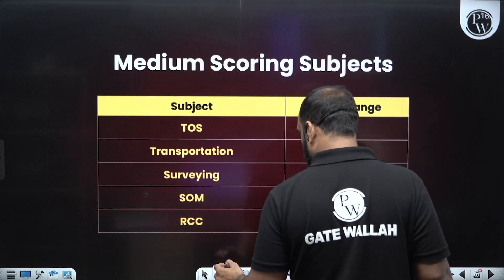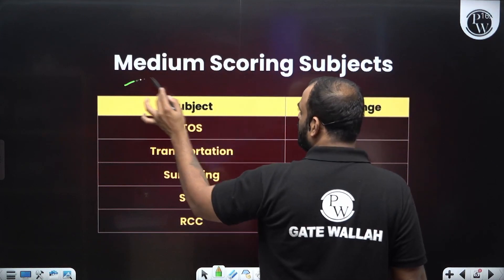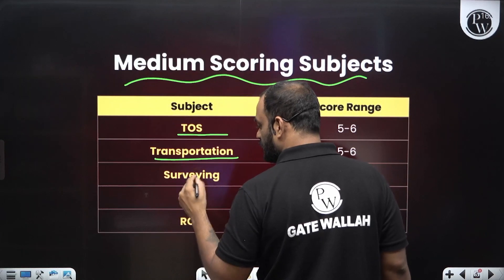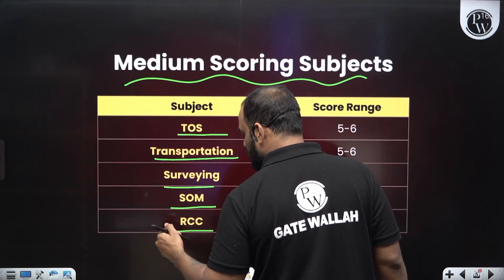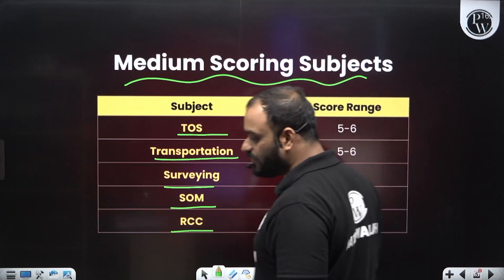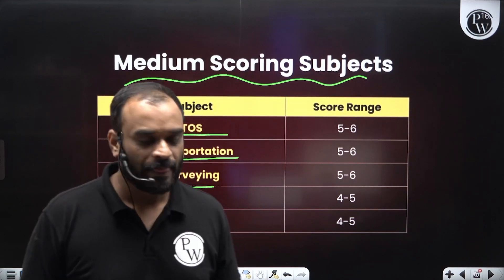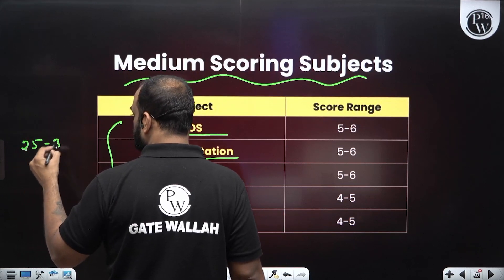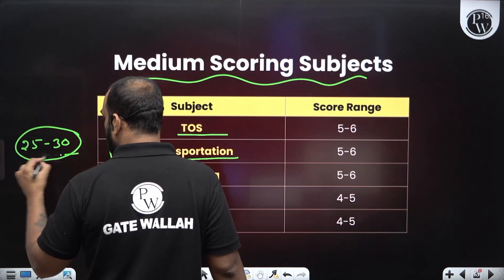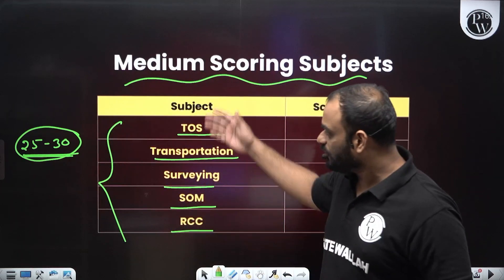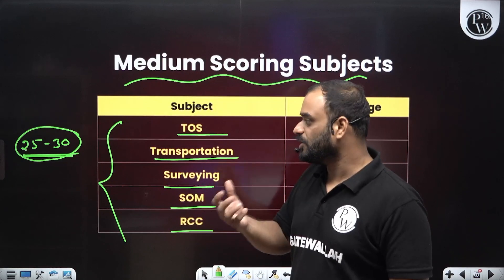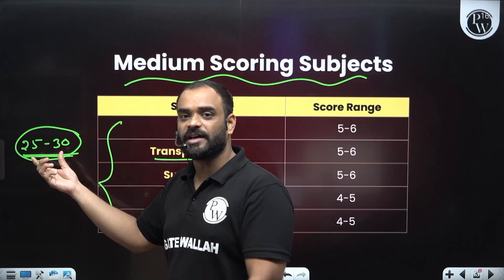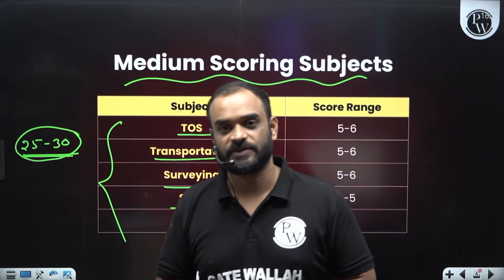The second category is medium scoring subjects. In medium scoring subjects we have: theory of structure, transportation, surveying, strength of material, and RCC. The weightage of individual subjects is basically 4 to 5 marks on average, and if you take the sum of that, it is basically 25 to 30 marks.